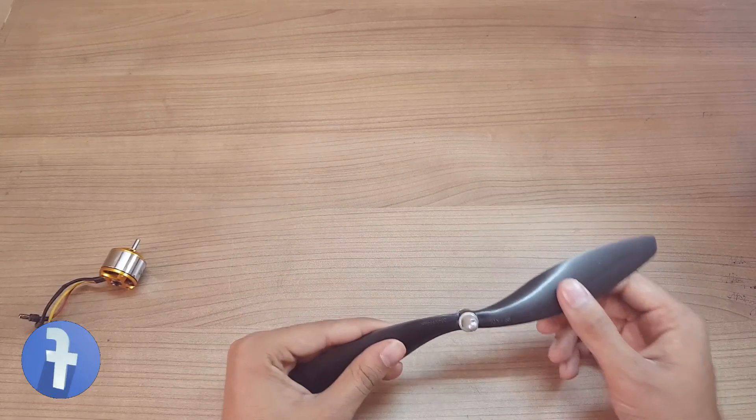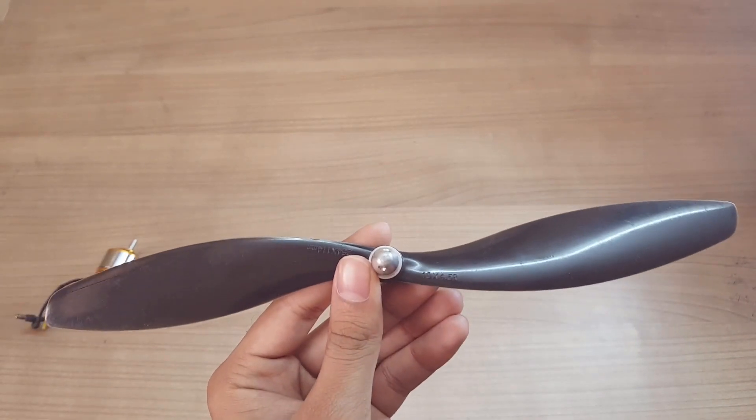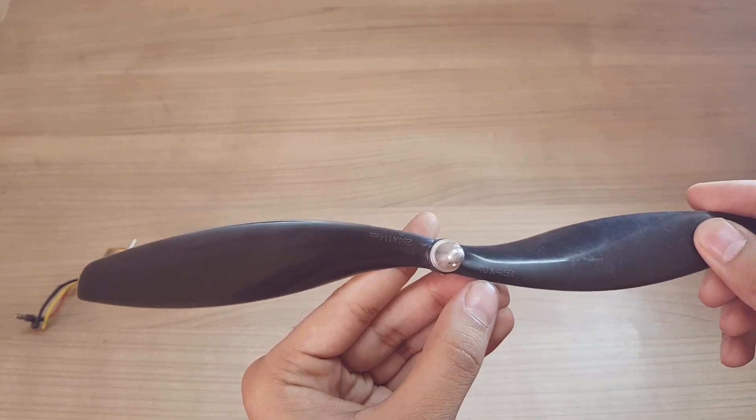Now choosing the propeller. I have done a lot of research and here I'm gonna tell you how you can choose the propeller. On the propeller you can find it's written 10 x 4.5 R. These are the ratings for the propeller.